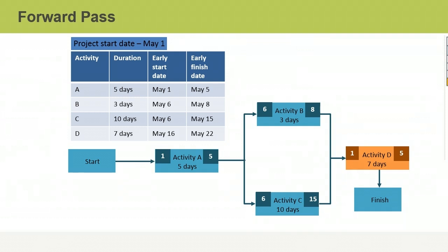For simplicity's sake, we're going to assume there are no weekends or days off in this schedule, although in reality you'd account for those. Activity B has an estimated duration of three days and can start only after Activity A finishes, so the early start date for Activity B is May 6th and its early finish date is May 8th. Activity C can also start on May 6th. It has a duration of 10 days, so its early finish date is May 15th. Activity D can start only after both Activities B and C are complete, so the earliest Activity D can start is May 16th. The duration of Activity D is 7 days, giving you an early finish date of May 22nd.